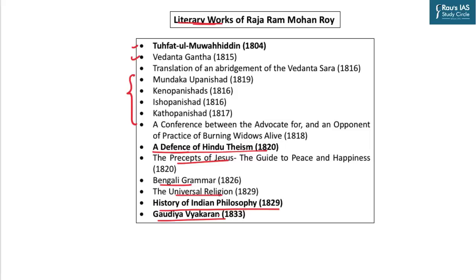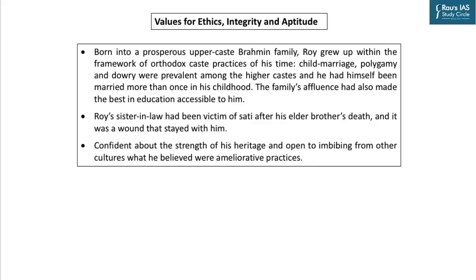If you just read through the names once, they will automatically stick in your mind. For the purpose of your ethics paper, you can use Raja Ramohan Roy's example in various contexts. He was born into a prosperous upper-class Brahmin family and grew up with orthodox caste practices around him. He saw child marriage, polygamy, and dowry to be very prevalent, and he himself was married more than once in his childhood. But he still stood against practices deeply embedded in his culture, practiced by his elders whom he revered. This is an example of integrity and also of courage of conviction.